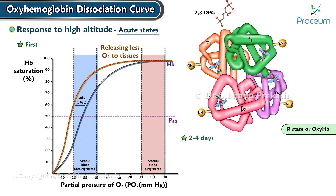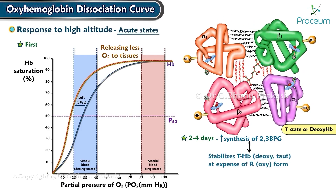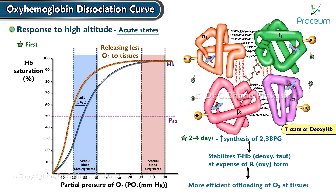Over the following 2 to 4 days, there is an increase in the synthesis of 2,3-bisphosphoglycerate. This stabilizes T hemoglobin (deoxy, taut) at the expense of the R (oxy) form. The result is more efficient offloading of oxygen at the tissues. Therefore, the oxygen-hemoglobin dissociation curve moves rightward.